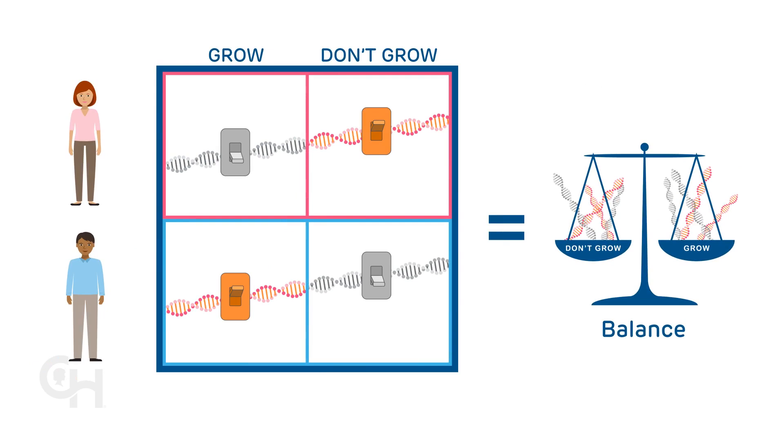Normally, the DNA is marked so that the mother's genes make the don't grow signal and the father's genes make the grow signal, creating a balance of grow and don't grow signals.